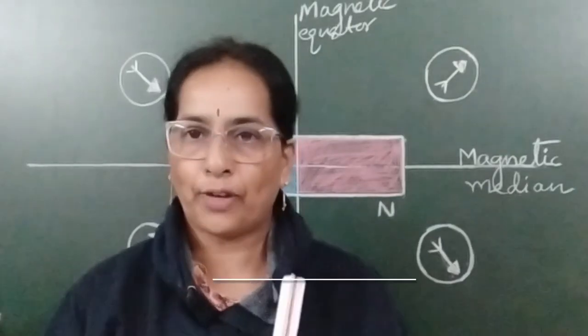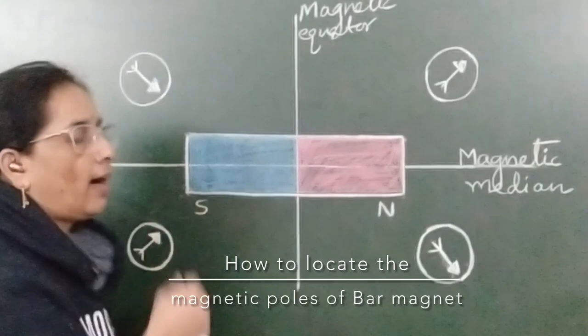For a bar magnet, this is called length of the magnet and these two are called the geometric poles. In that case, where is the magnetic poles of a magnet?